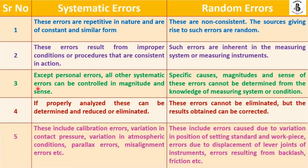Third point: in case of systematic errors, except personal errors, all other systematic errors can be controlled in magnitude as well as sense. By proper methodologies and proper alignment, you can control all kinds of errors in measurement — using proper precautions and standard methods of measurement.